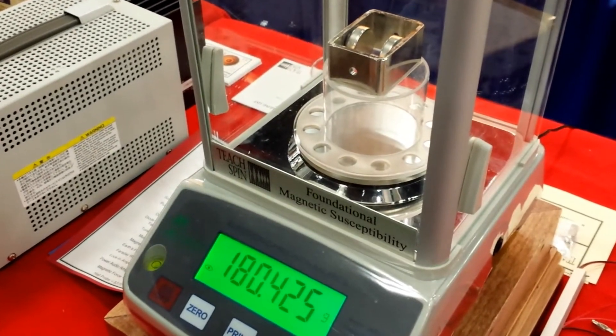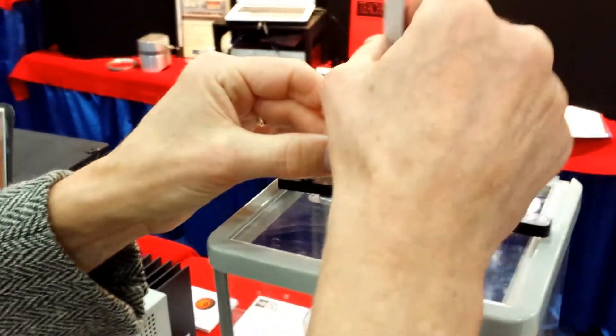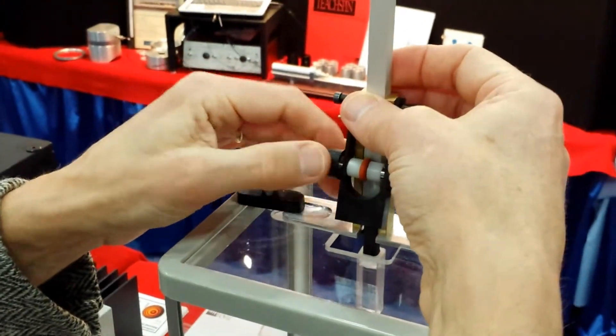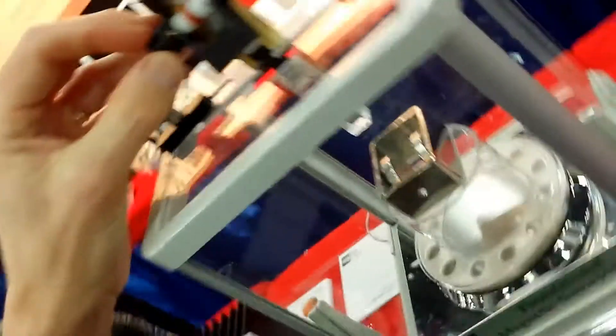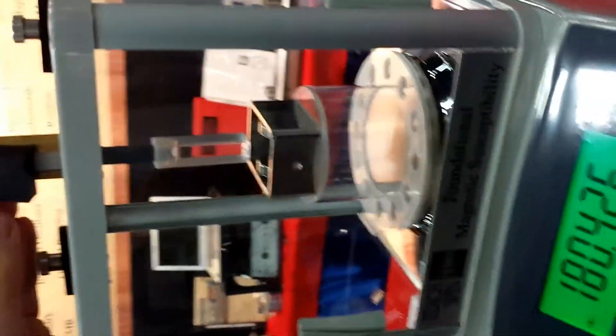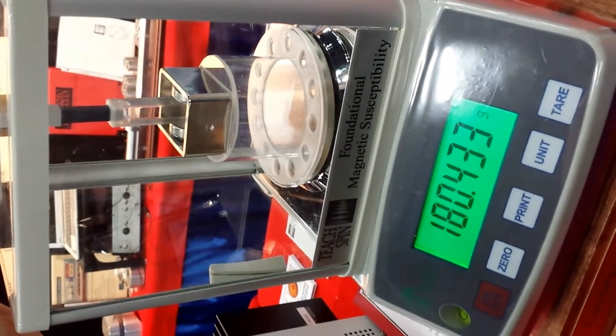So the control group is 180.425 grams. And now I'll get the sample into its little holder and bring it down smoothly into the vicinity of the magnet. So the indicated mass stays the same until the water gets near.